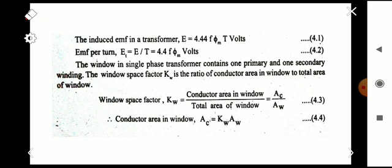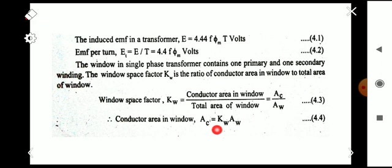The window in a single-phase transformer contains one primary and one secondary winding. The window space factor K_w can be found using the ratio of conductor area in the window to the total area of the window. That is, K_w = conductor area in window (A_c) divided by total window area (A_w). From that, we obtain the conductor area in the window as A_c = K_w × A_w. This is equation 4.4, which we will use further.